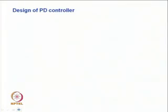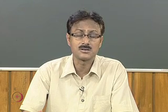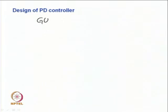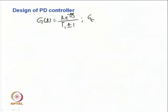We will now discuss the design of the PD controller and develop analytical expressions for the parameters of the PI and PD controllers. The process dynamics is given by G(s) = K·e^(−θs) / (T₁s ± 1), and the PD controller Gc2(s) is described by Kf·(1 + Td·s).